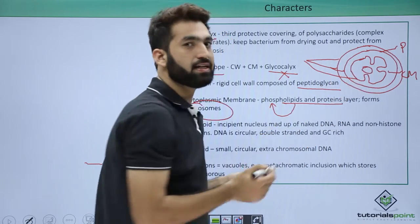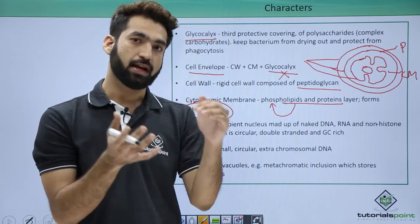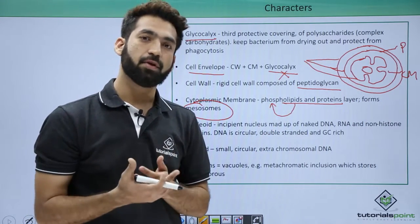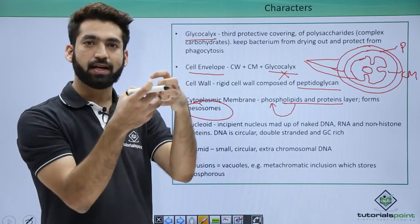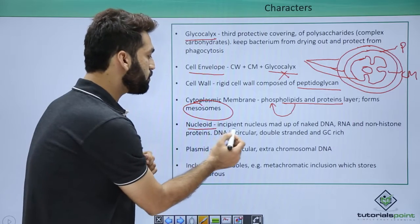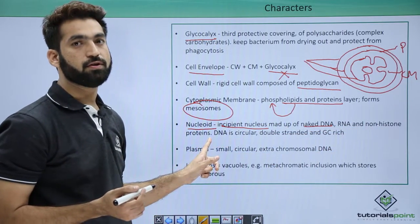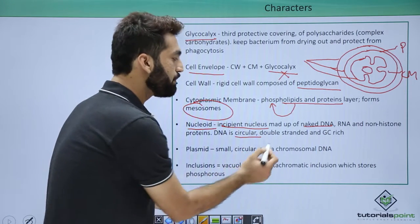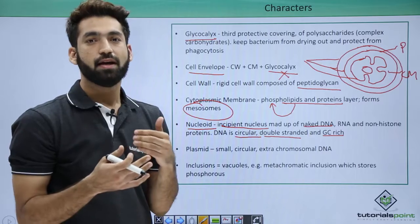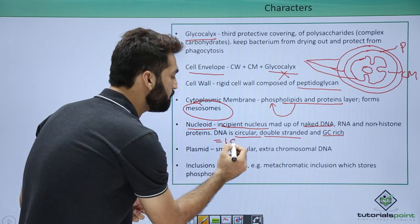The DNA of bacteria is present with non-histone proteins. In eukaryotes, histone proteins pack the DNA, but in bacteria histones are not present. Instead, non-histone proteins like polyamines are present, which combine and coil the DNA. The DNA in bacteria has no nuclear membrane, so it is called a nucleoid. A nucleoid is also called an incipient nucleus or genophore, which is naked DNA. It can also contain RNA and non-histone proteins. The bacterial DNA is circular, double-stranded, and GC-rich, and is considered as one chromosome, so bacteria are haploid.